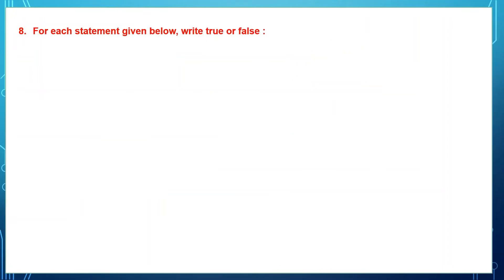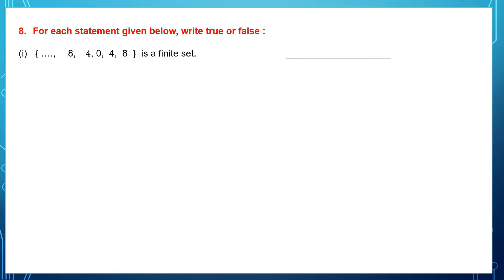Question 8: for each statement given below, we need to write whether it is true or false. The first set has dots showing many numbers going on, and the statement says this is a finite set. No — this is an infinite set, so this statement is false.